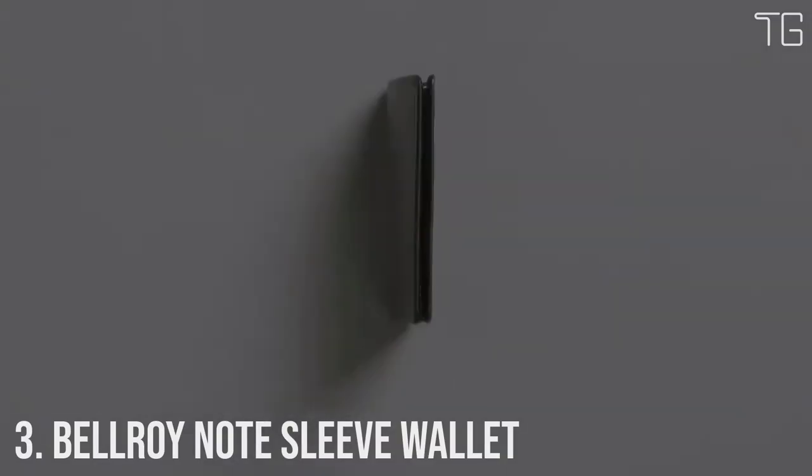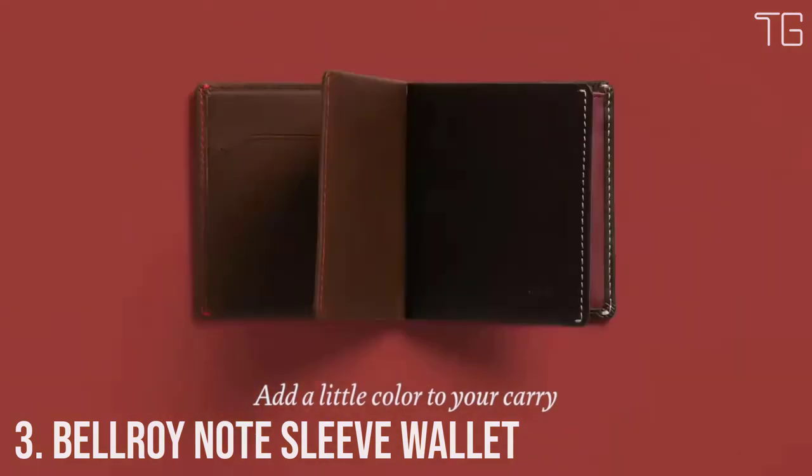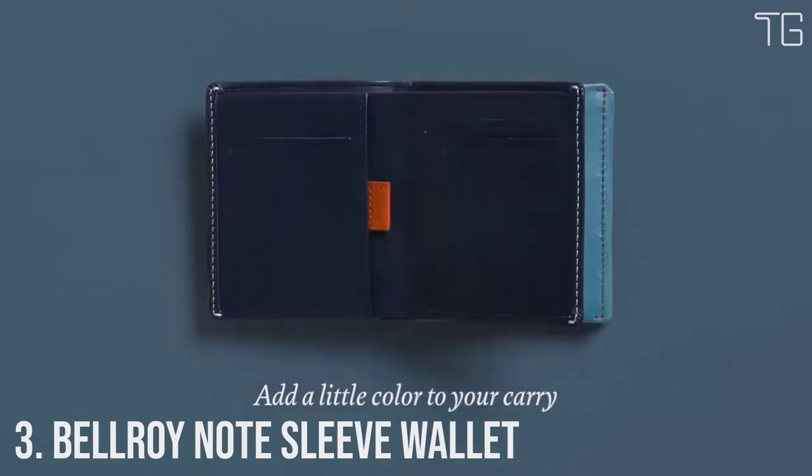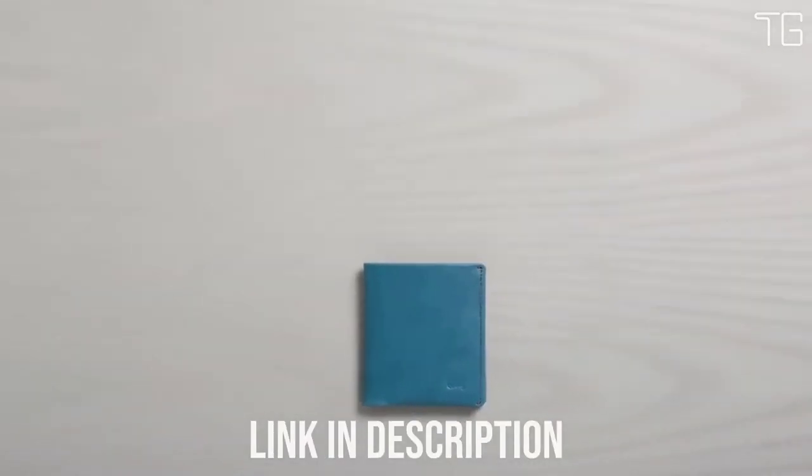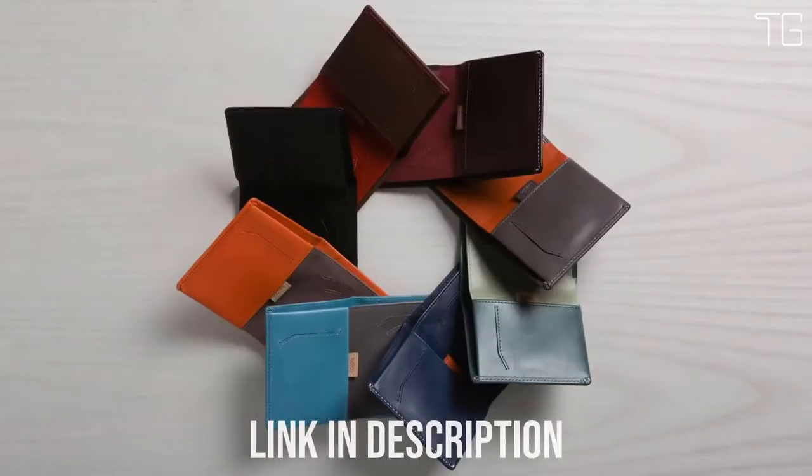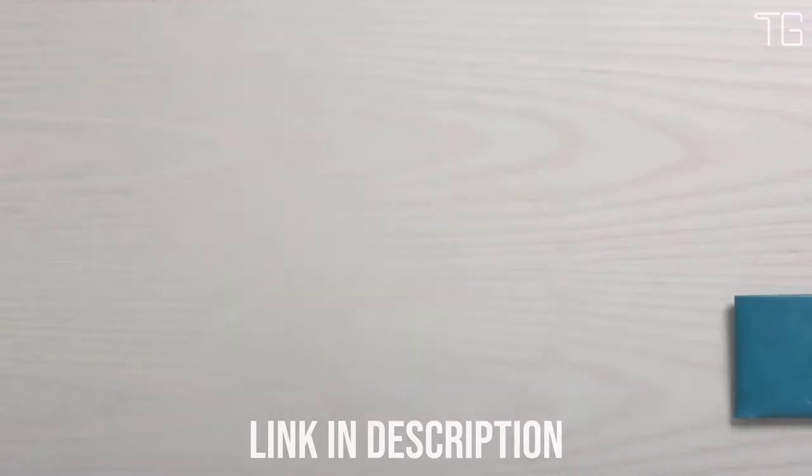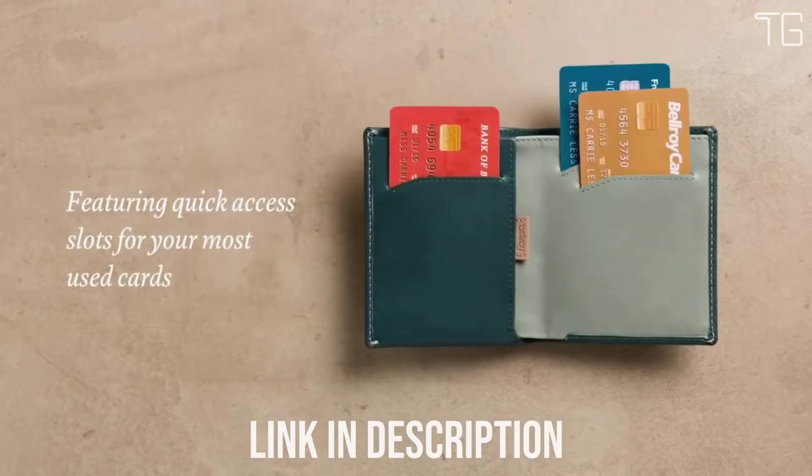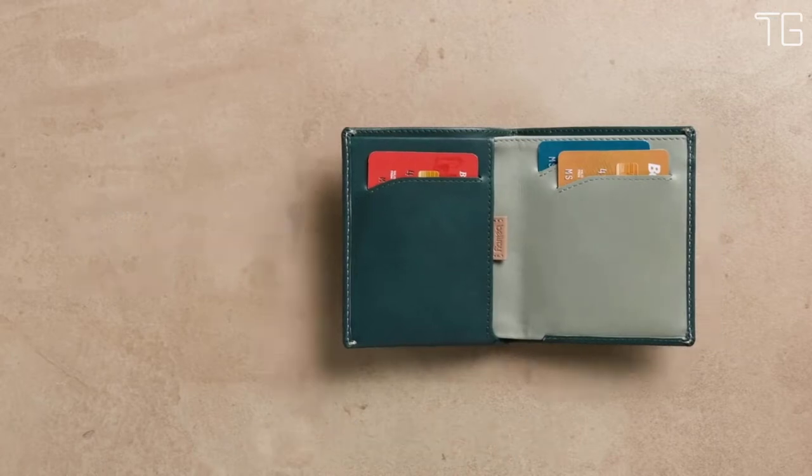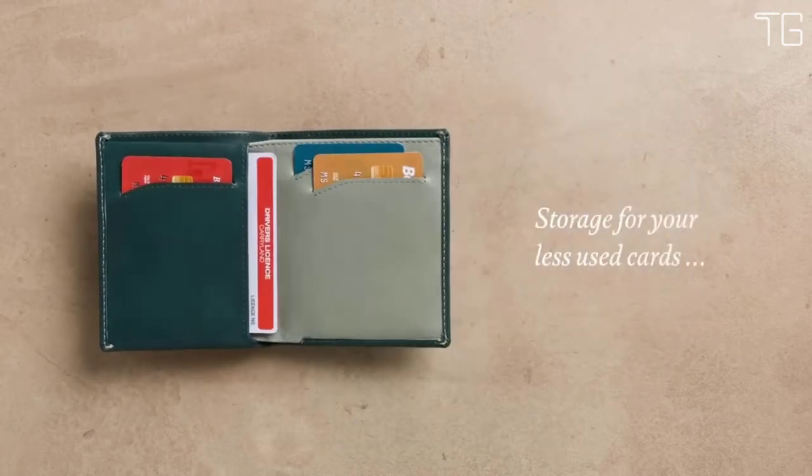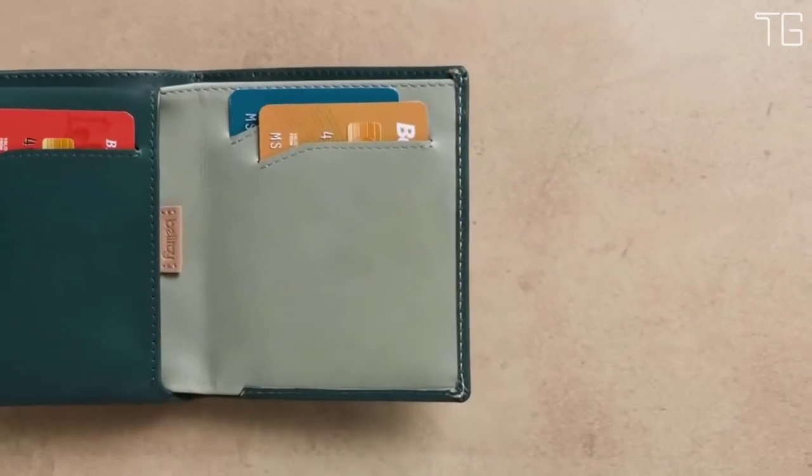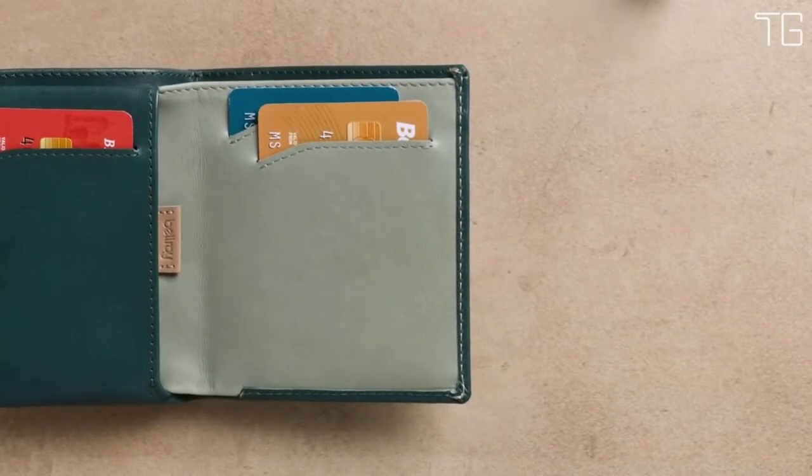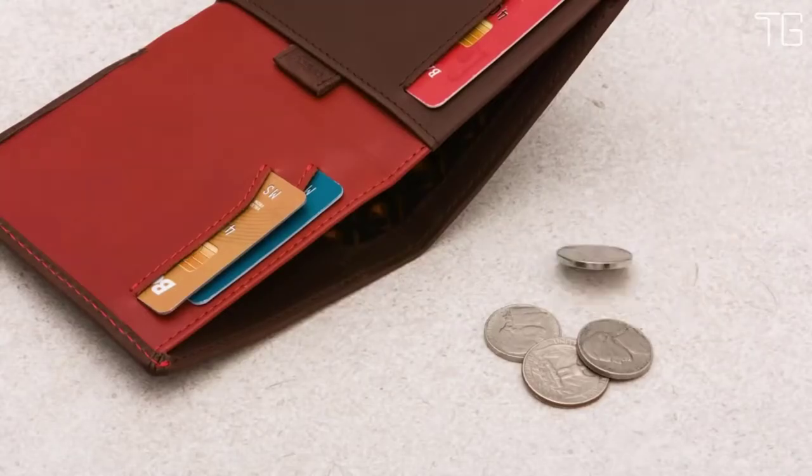Number 3. Bellroy Note Sleeve Wallet. The Bellroy Note Sleeve is a fully-featured billfold without the cumbersome size and some clever design trickery that helps keep your wallet slim and everything in it easily accessible. Place your most-used cards in the wallet's main slots for quick access and move your less-used cards to the pull tab section for when you need them. The Note Sleeve's height means it can stay super slim while carrying tall currencies like pounds and yen. Perfect for your international travels.